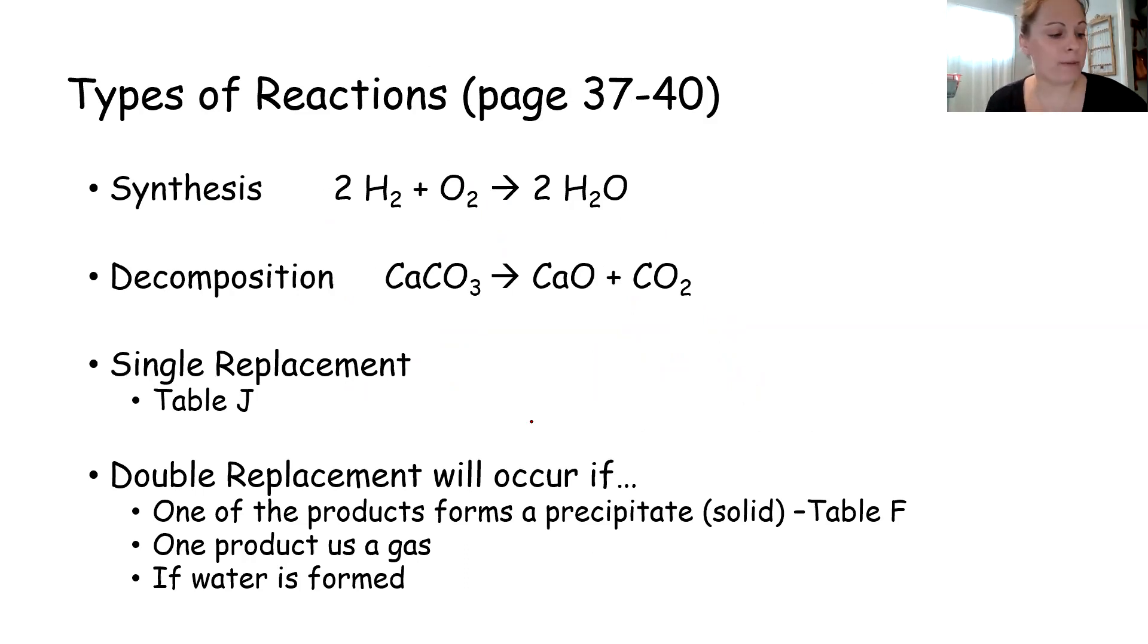All right. Another piece of review. Before we left, we were getting ready to have a test on types of reactions. So on pages 37 and 40, we're just going to quickly recap the four different types of chemical reactions. Synthesis and decomposition, we were really good at recognizing those. In synthesis, you're taking two reactants and making one product. In decomposition, you're taking one reactant and you're breaking it up into multiple products. For single replacement, you had one ion replacing another and you're going to need table J to do an example on the following slide. With double replacement, those reactions will only occur if one of the products forms a precipitate or a solid. We'll do an example using table F. If one of the products is a gas or if water is formed, that is when a double replacement will occur.